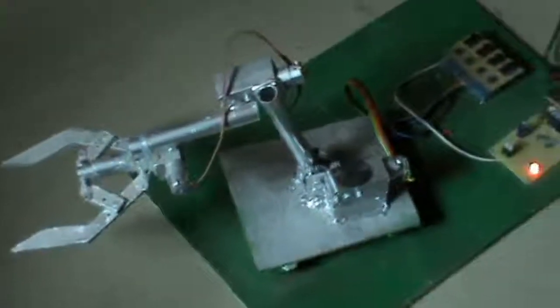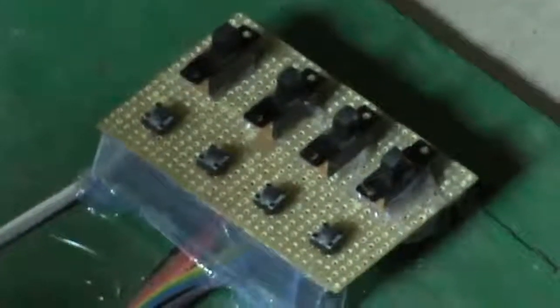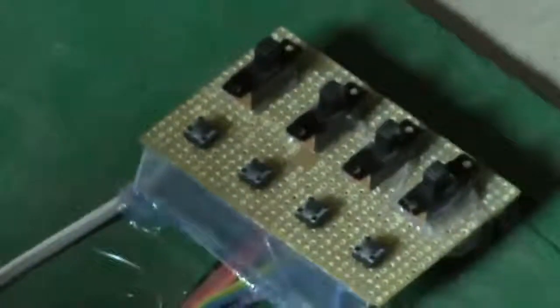This is the power supply section of the same. We're having four toggle switches and micro switches. Toggle switches are used to change the direction of the motor, and a micro switch or push button is used to make it move in the four motors.